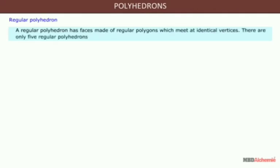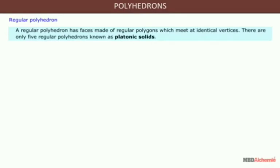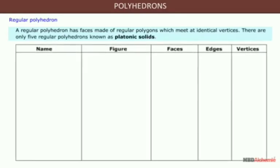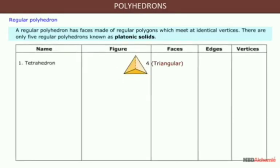There are only five regular polyhedrons, known as Platonic solids. The tetrahedron has four faces, six edges, and four vertices.